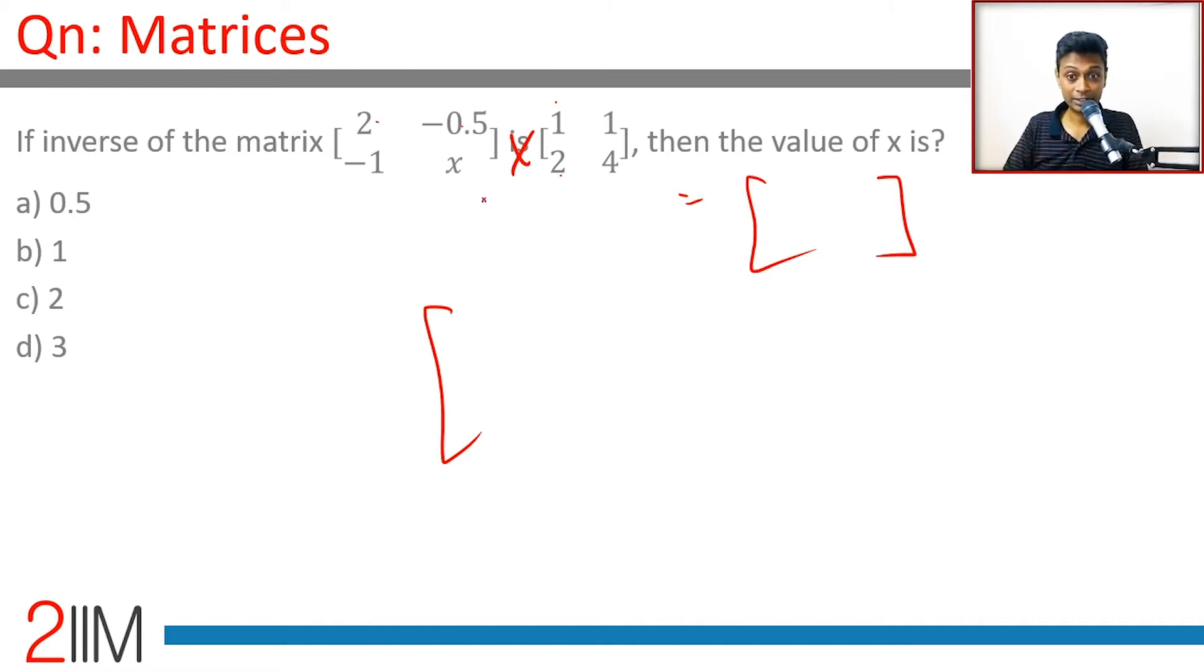The second row, first column should be this number: minus 1 into minus 1 plus x into 2. That's what this column is going to be. If you multiply this and this you're going to get 1. I just need this to be 0. Minus 1 plus 2x is equal to 0, so 2x is equal to 1, x is 1 by 2.